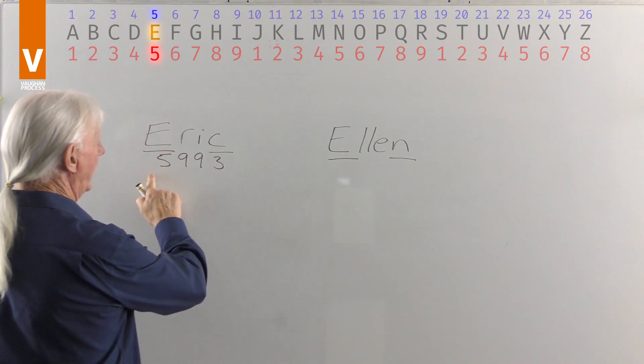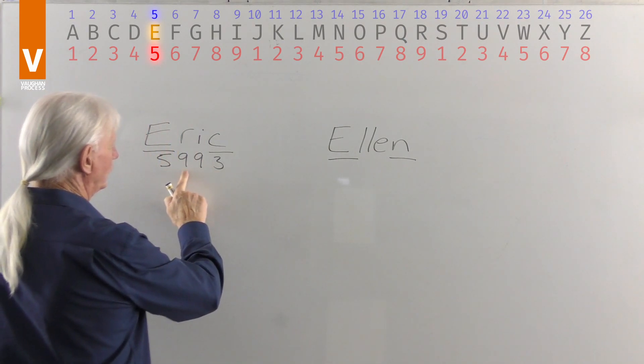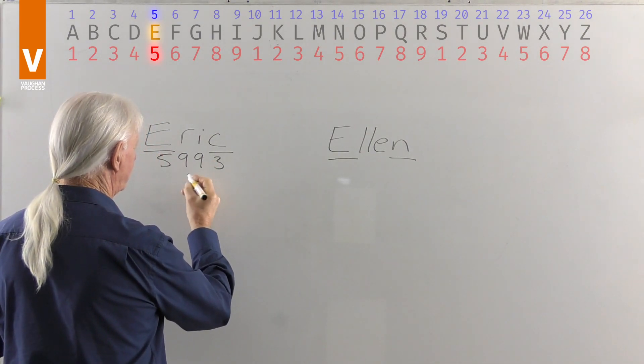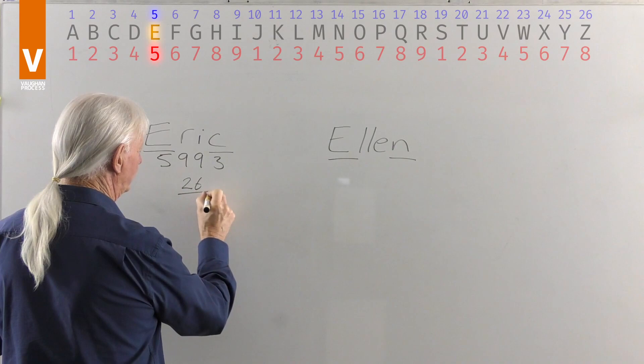Now with Eric, if we add that up, 5 and 9 is 14, 23, 26. 2 plus 6 equals 8.